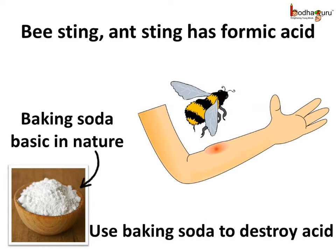When an ant or bee stings us, it injects acid inside us which causes pain. We may use baking soda, which is basic in nature, on the skin where the bee has stung to stop the acidic effect.